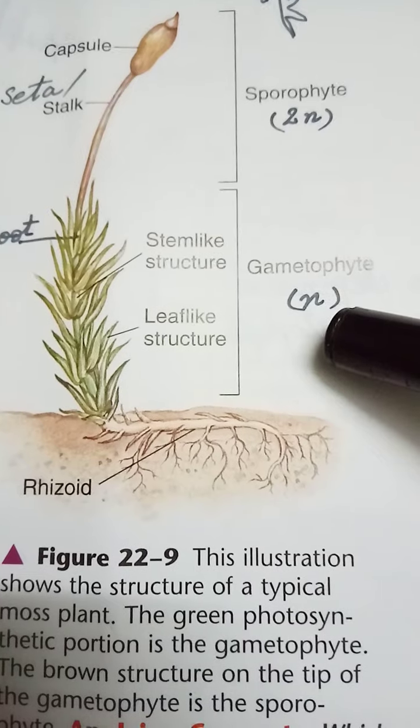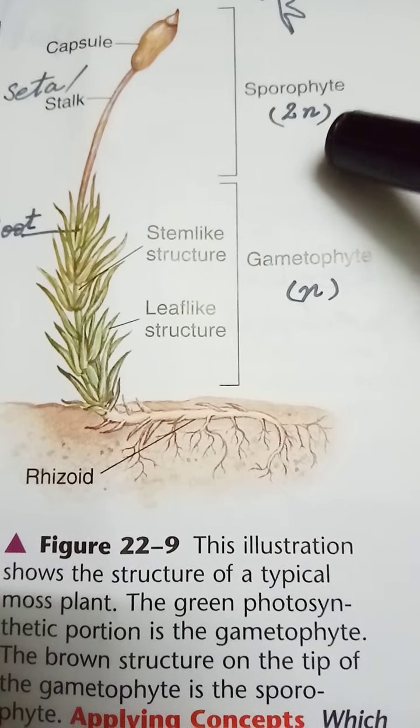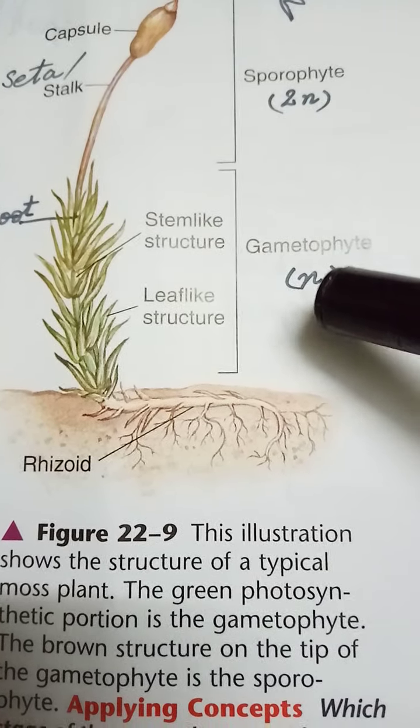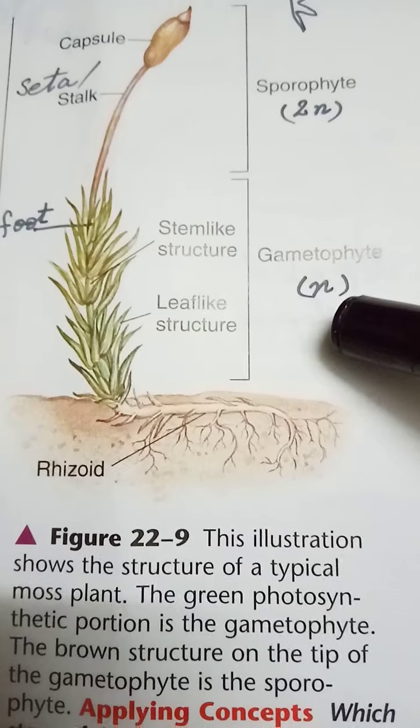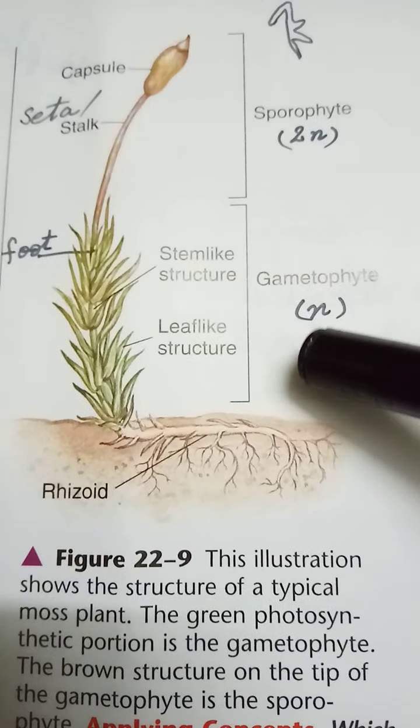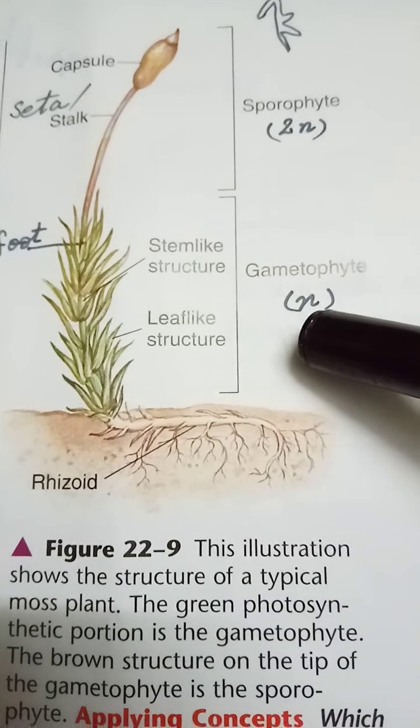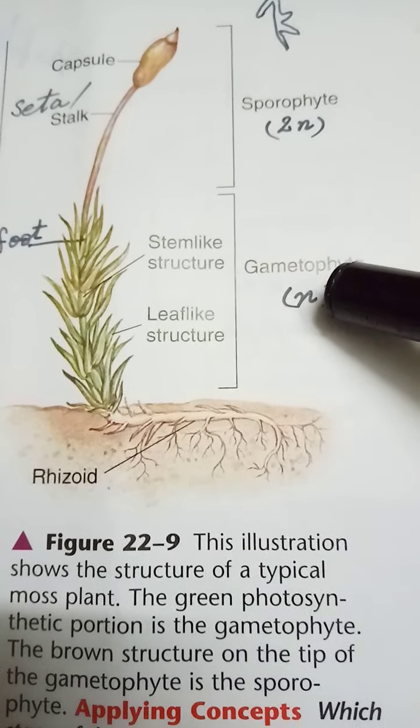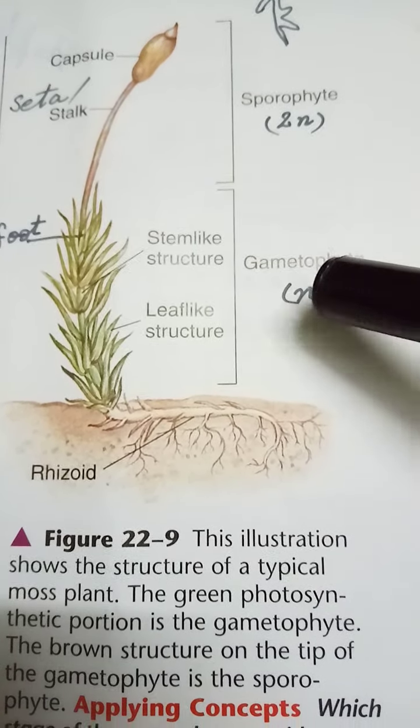The gametophytic phase is haploid and the sporophytic phase is diploid. The gametophytic body is the dominant phase in bryophytes — this is also a commonly asked question: which phase is dominant in bryophytes? The answer is gametophyte. The sporophytic phase is dependent on the gametophyte for food and water.